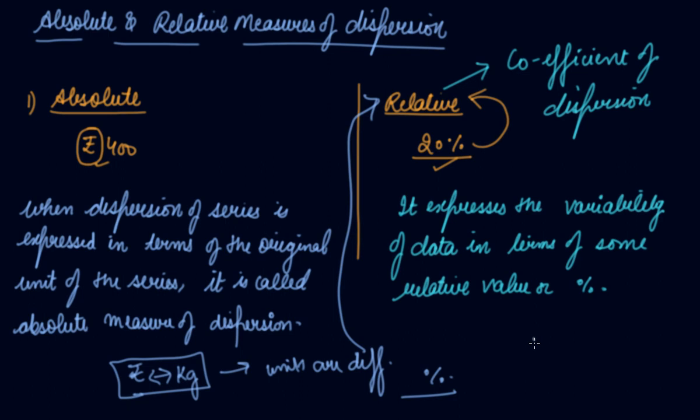If you have to compare the same units, that is rupees with rupees, the unit is same. So you can use the absolute measure in that case. But if you need to compare two different units, then you need to do a relative measure of dispersion. It is also known as the coefficient of dispersion.